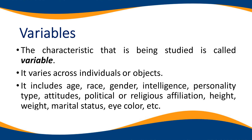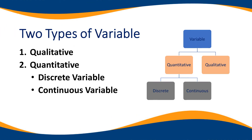Ibig sabihin, pagka sinabing variable sa statistics, ito yung mga characteristics o ito yung mga bagay na nagkakaiba-iba ang tao — sapagkat ang tao ay hindi pare-pareho ng edad, ng itsura, ng kulay, ng kakayahan, ng personalidad. Yan ang tinatawag na variable. There are two types of variables.